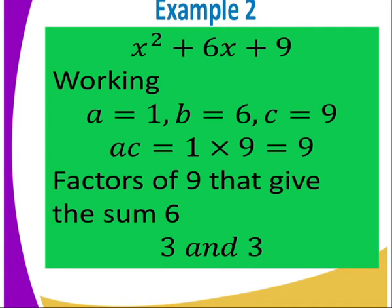Now let us take example 2. We have X squared plus 6X plus 9. That is a quadratic expression. We identify A, B, and C. My A equals 1, my B equals 6, and my C equals 9. When we take AC, 1 times 9 equals 9. The factors of 9 that give the sum 6 are 3 and 3.